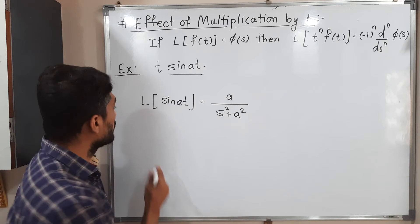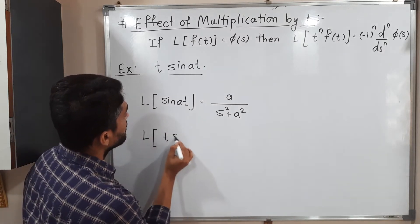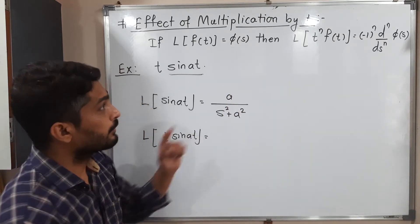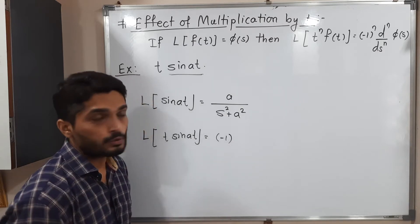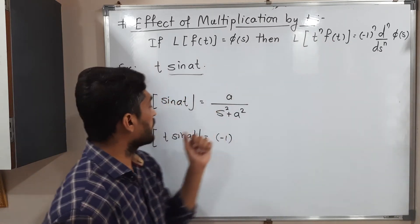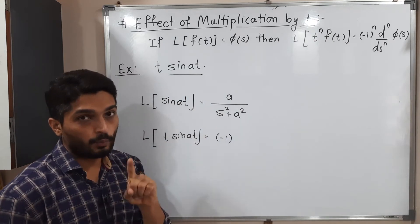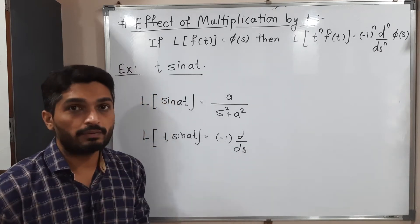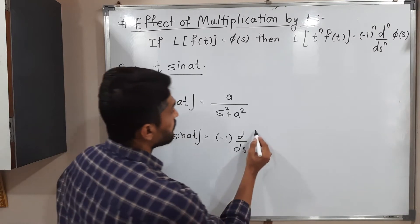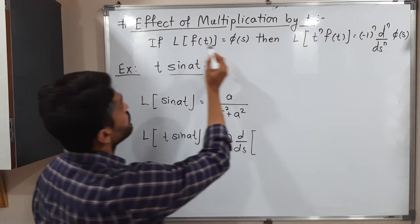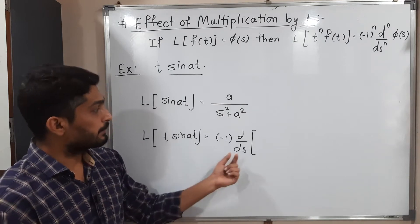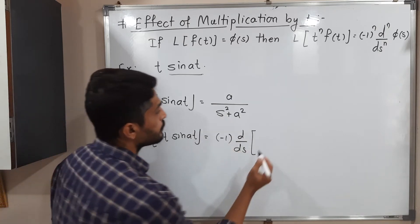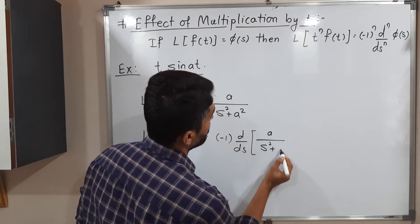Now I am going to consider that t. For the Laplace transform of t·sin(at), the rule says: when you have t^n, apply (-1)^n times the nth derivative of φ(s), where φ(s) is the Laplace transform of the neighboring function. Here t^1 is present, so n = 1. Therefore (-1)^1 times the first derivative of the Laplace transform of sin(at), which is a/(s² + a²), is what we need.